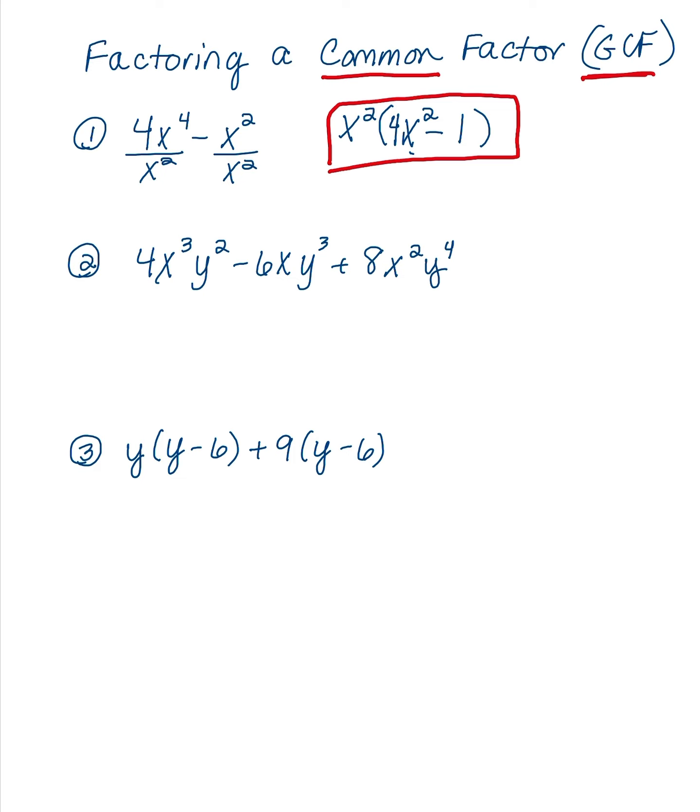Let's look at the next example here. First you want to think about how many terms you have. You have three terms. And then you want to think about what is common in each of the three terms. First you want to look at your coefficients, your coefficients 4, 6, and 8. A common factor is 2, so that means I can factor out a 2.